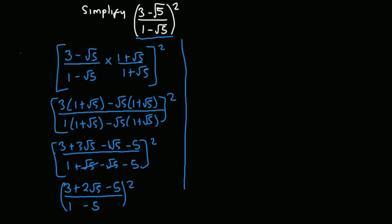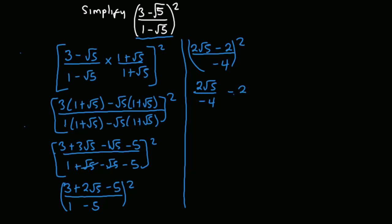So we now have (2 root 5 minus 2) divided by negative 4, all squared. Simplifying further, we get 2 root 5 divided by negative 4, minus 2 divided by negative 4, all squared. This simplifies to negative (root 5 / 2) plus (1/2), all squared — or equivalently, negative (1/2) root 5 plus 1/2, all squared.